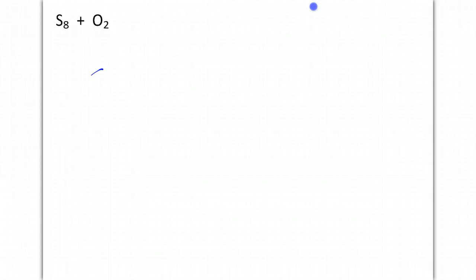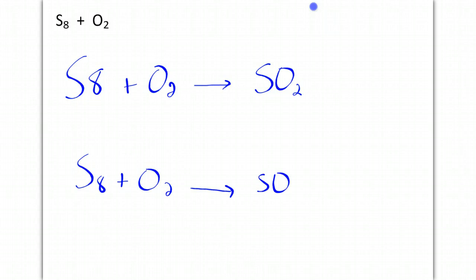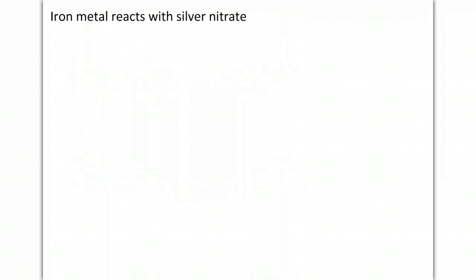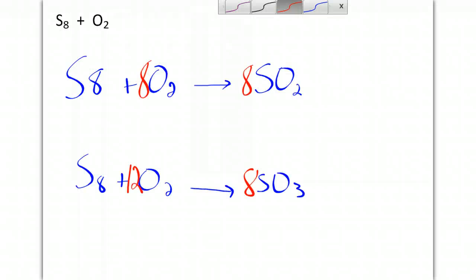Here's our next reaction, and this one, you have to actually look online to see what the products are going to be. So here you have two options. There's SO2, and we could also have SO3. And so we'll balance these. This will end up having an 8, which gives this one an 8 as well. The bottom one will end up having an 8 here, giving me 24 oxygens, so then I'll need a 12 in front of oxygen to balance it. Also, these are a synthesis reaction.